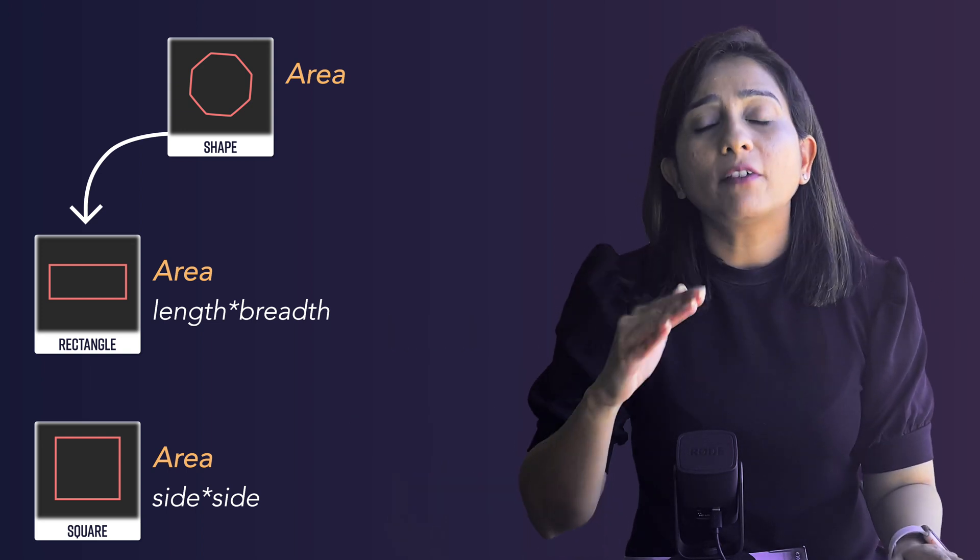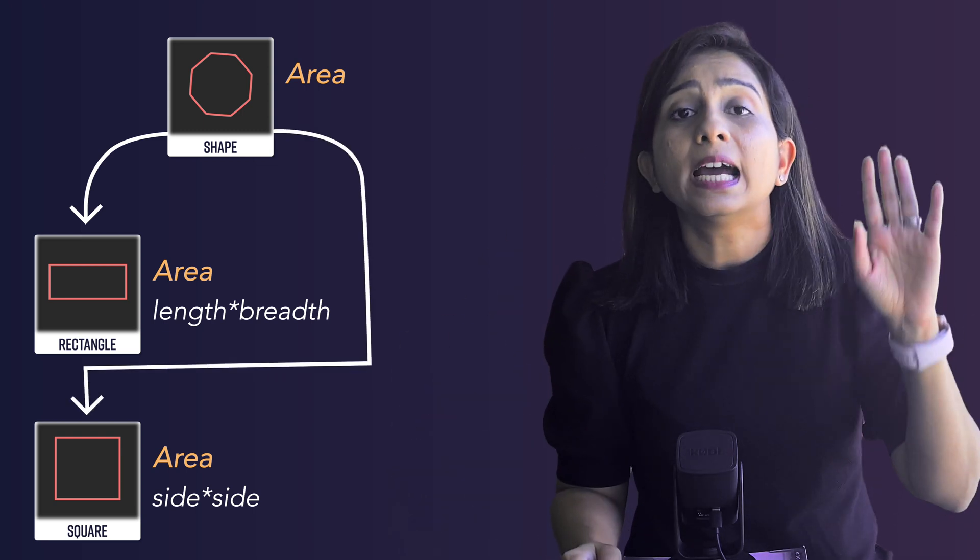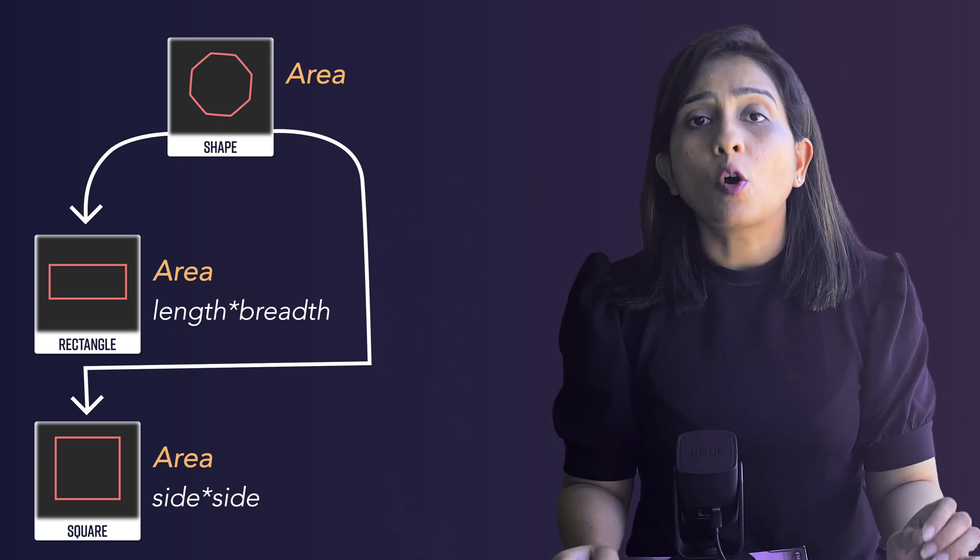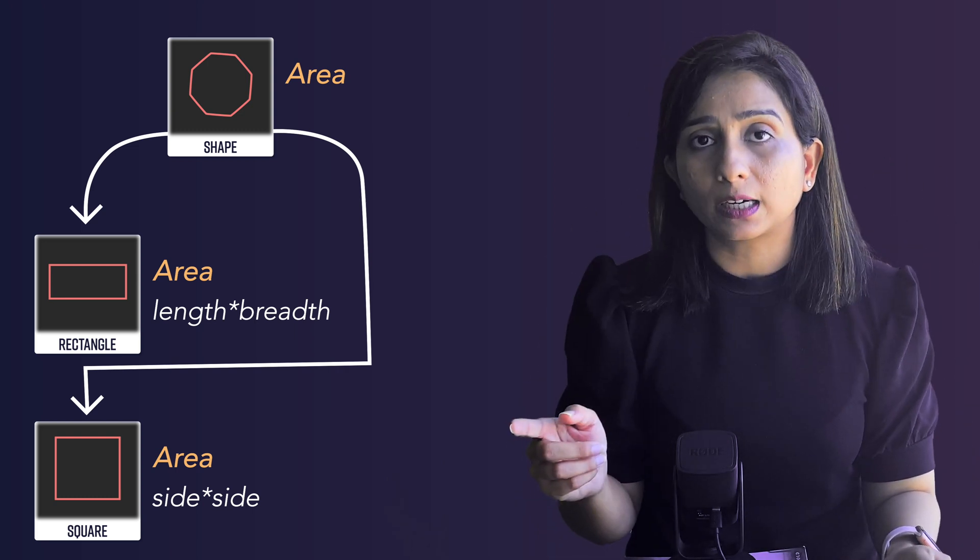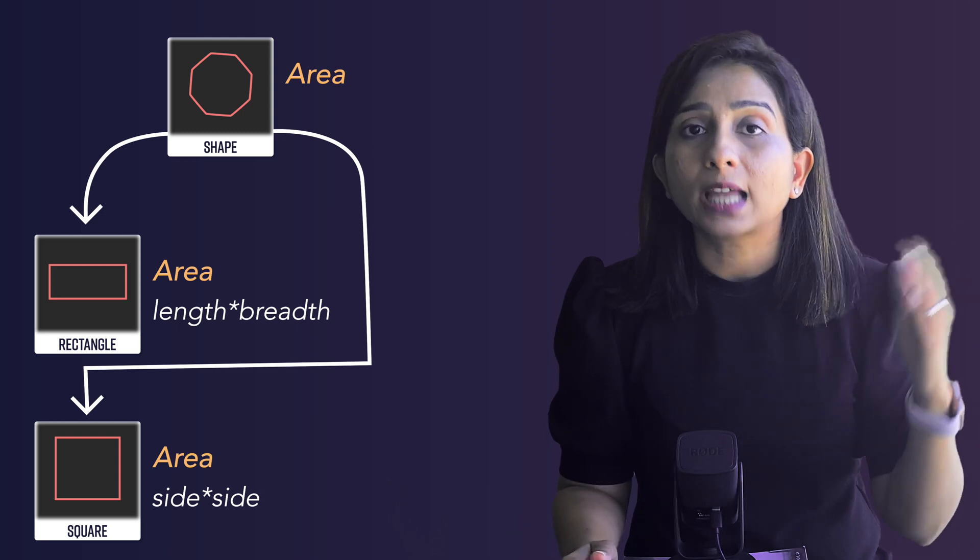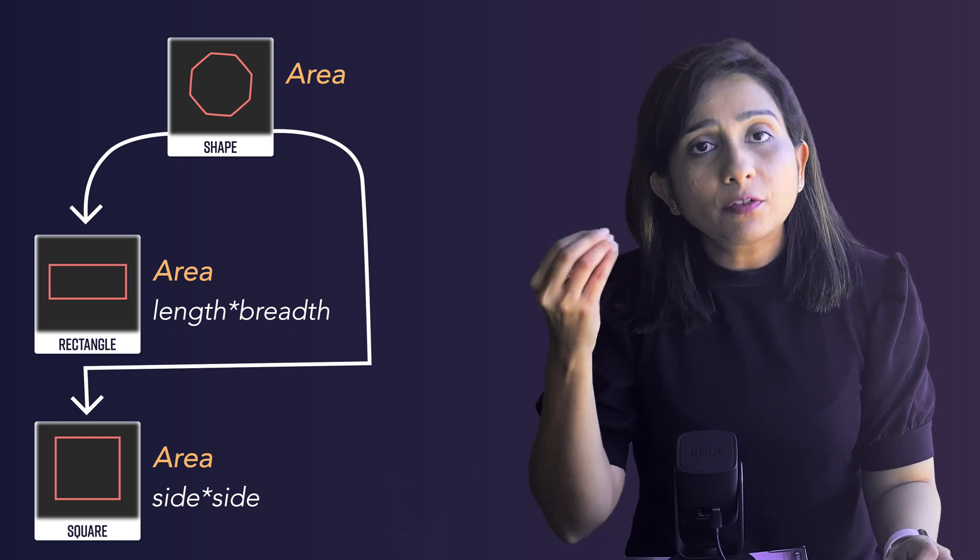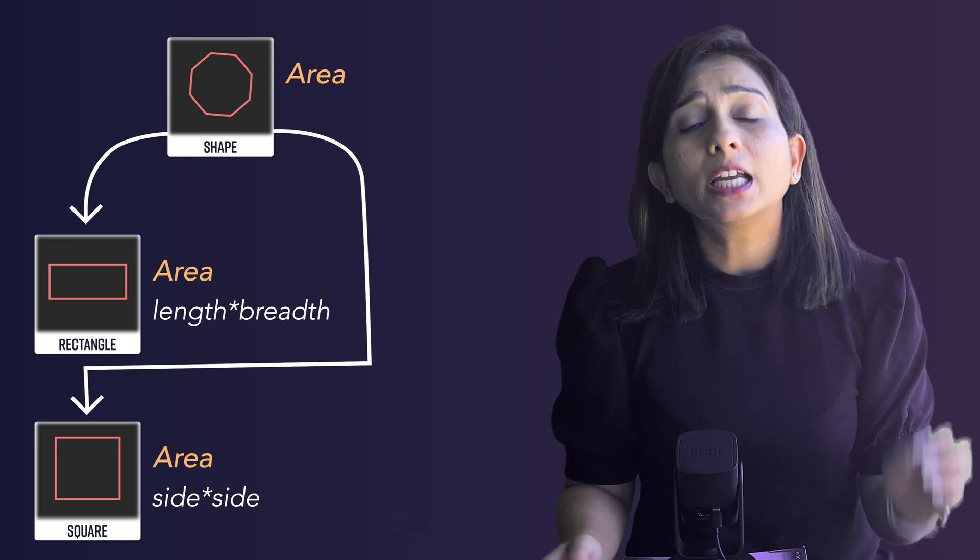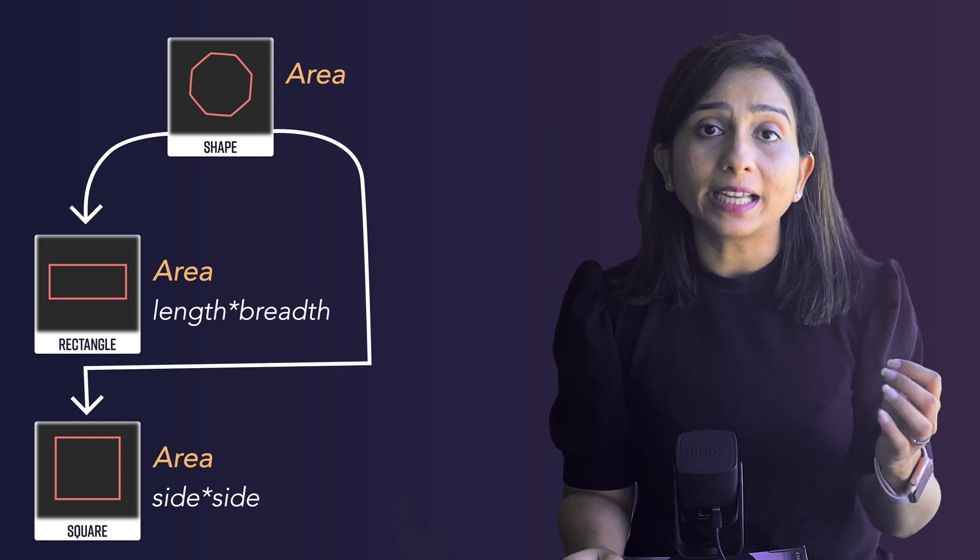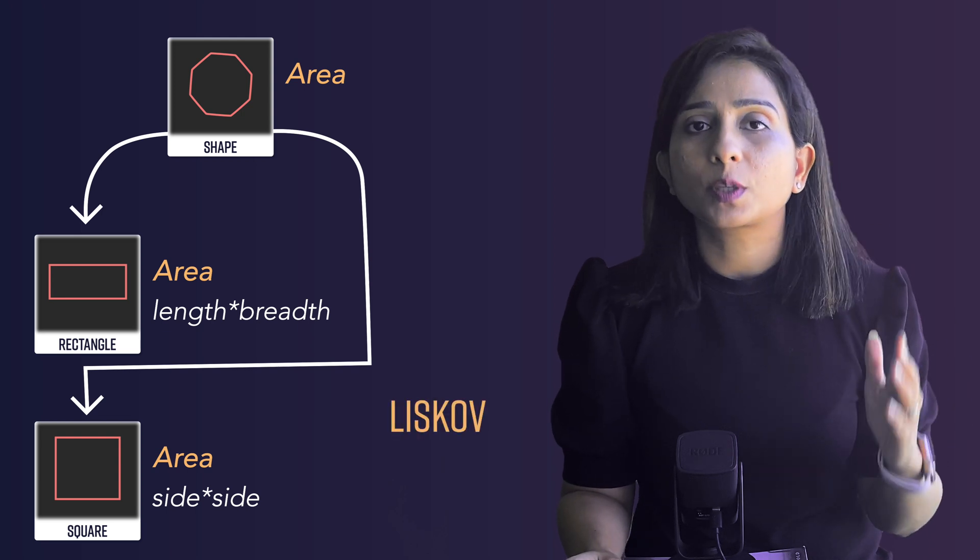If instead you would have inherited Square from the Shape class itself, Square can have its own area implementation, Rectangle can have its own area implementation and the client code which is calling the instance of either Shape class or Rectangle class or Square class is actually able to call getArea without worrying about what is happening inside. Also the function which is accepting the instance of Shape class, even if you pass the instance of Rectangle or Square class to it, it will not impact the existing functionality and it will not break the existing code. So this is how you figure out if any particular code is breaking the Liskov Substitution Principle.